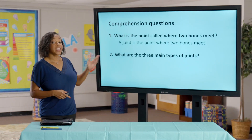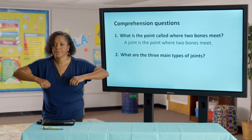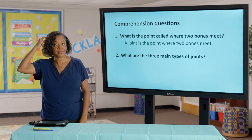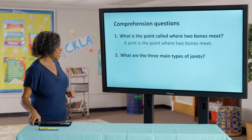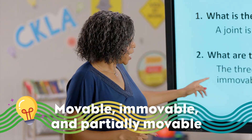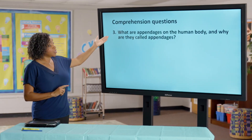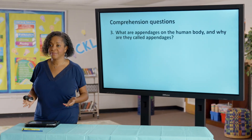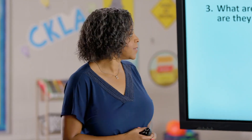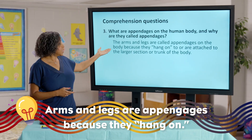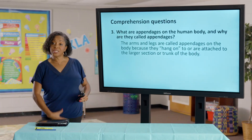Next question: what are the three main types of joints? Remember — movable, immovable, or partially movable. Next question: what are appendages on the human body and why are they called appendages? It was connected to the term appendicular bones. The arms and legs are called appendages on the body because they hang — your arms hang, your legs hang — and they're attached to the larger section, or the trunk, of your body.